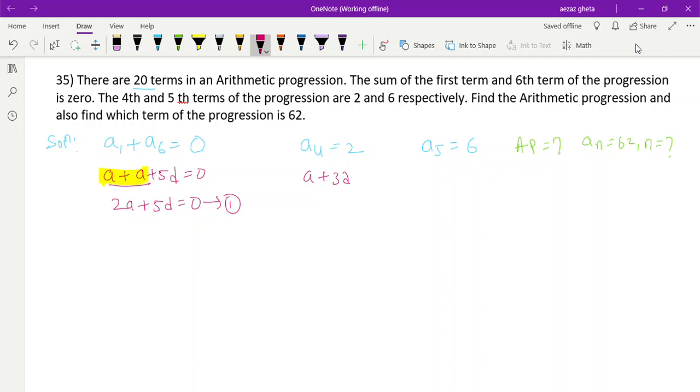Wait, they did not give sum here. In the second part, they did not give sum of 4th and 5th term. They gave the 4th is 2 and 5th is 6. So a₅ is a plus 4d equals 6.